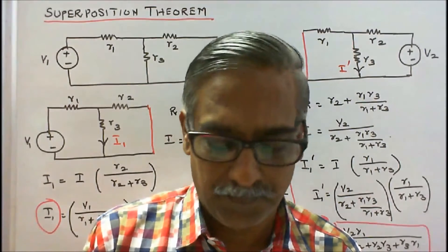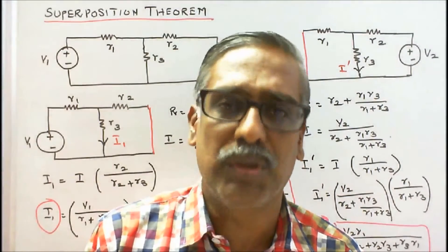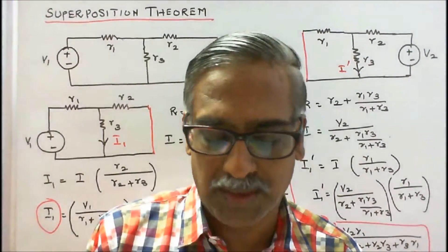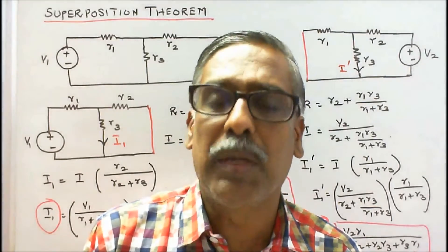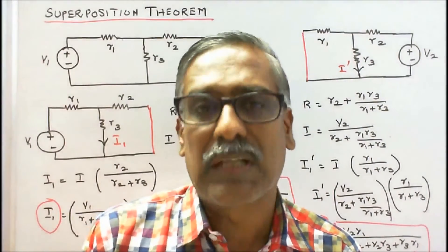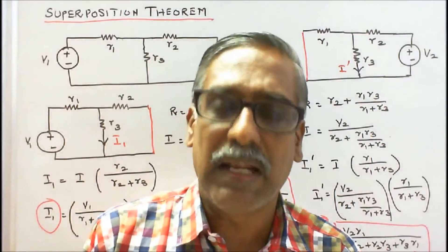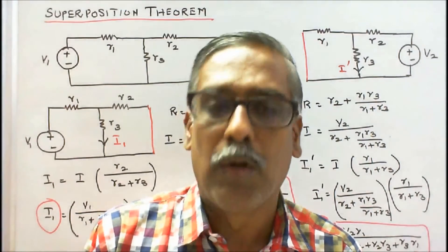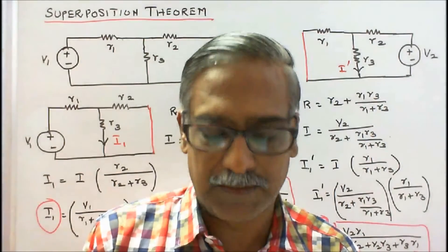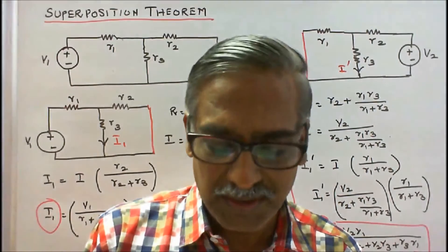Statement of superposition theorem: In a circuit having more than one voltage and current source, the total current or voltage in any branch is the algebraic sum of currents or voltages produced by each source acting separately. When a number of voltage and current sources are acting in a linear network simultaneously, the resultant current in any branch is the algebraic sum of currents, taking one source at a time while deactivating the others. The voltage source is replaced by its internal resistance, while the current source is replaced by an open circuit.